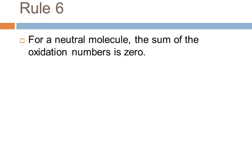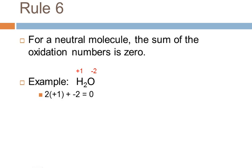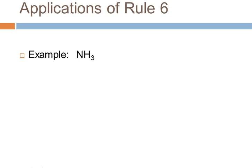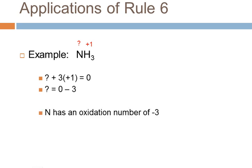Rule number six: for a neutral molecule, the sum of the oxidation numbers is zero. In H2O, there are two hydrogens at plus one each, and the oxygen is minus two, which adds up to zero. This is a really handy rule for elements that can form multiple ions. For example, in ammonia, each hydrogen has an oxidation number of plus one. Nitrogen can do many different things, but using rule six, we can say the oxidation number of nitrogen plus three times plus one from the hydrogens must equal zero — which means nitrogen in ammonia has an oxidation number of minus three.